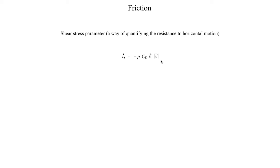There aren't many new symbols in the shear stress parameter equation. One is density, represented by ρ. This makes sense — if you have a really dense fluid, there's much more resistance. If you've ever tried running in water in a pool or on a beach, you know it's almost impossible because there's so much resistance from how dense water is. Water is many times more dense than air, so it's much harder to run through. So naturally, if you have a denser fluid, you're going to have a stronger force of friction, and the shear stress parameter quantifies how strong that friction is.